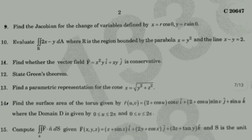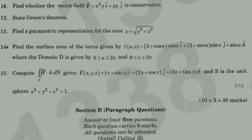Find whether the vector field F = x²y·i + xy·j is conservative. We will check the vector field using the standard method.